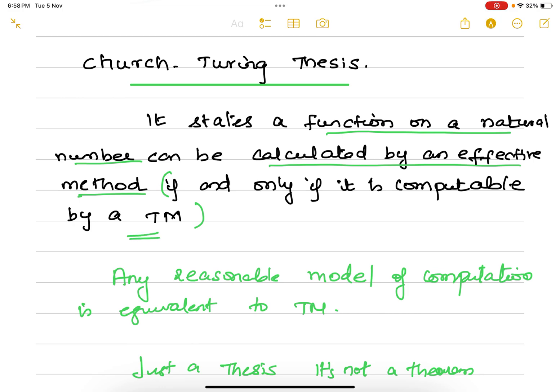If it is computed by a Turing machine, then the same function can be calculated with the help of an effective method. That is what is called as Church-Turing thesis.